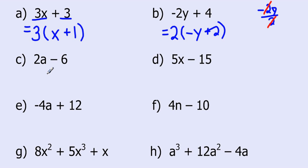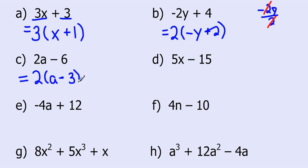For 2a minus 6: the greatest common factor is 2. You can't take an a out because there's no a in the second term. When I divide 2a by 2, I'm left with a. Negative 6 divided by positive 2 gives us negative 3. For 5x minus 15: the greatest common factor is 5. 5x divided by 5 is x, and negative 15 divided by 5 is negative 3.